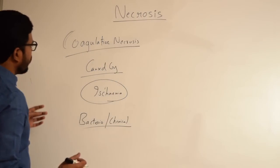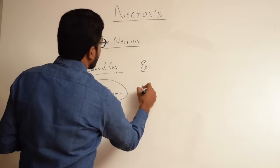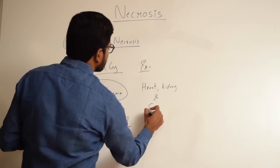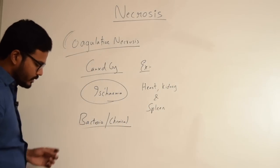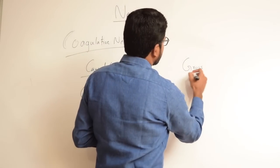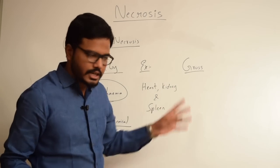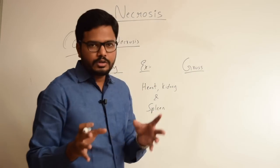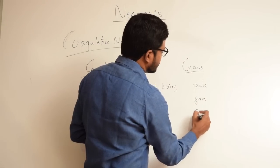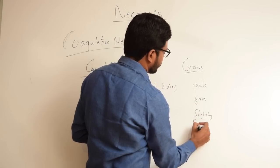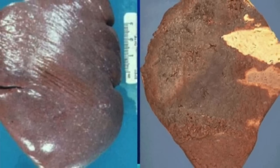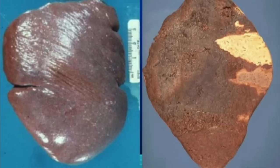The organs where we commonly encounter coagulative necrosis include the heart, kidney, and spleen. Coming to the gross appearance, in the initial stages the foci of coagulative necrosis appear as pale, firm, and slightly swollen. But as it progresses, they appear to be more yellowish, softer, and shrunken.